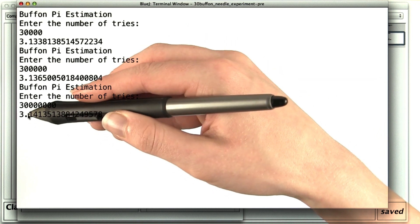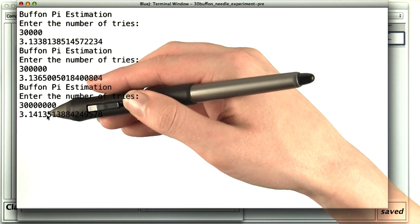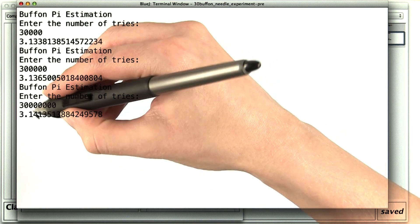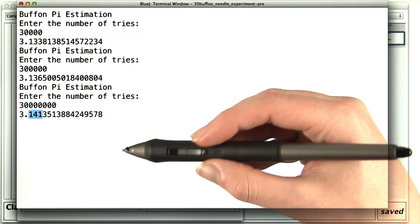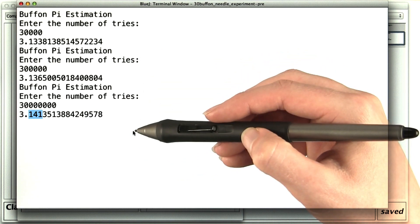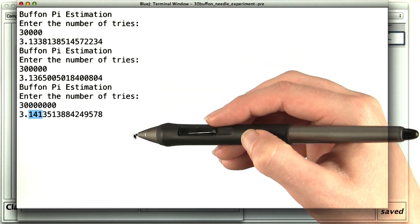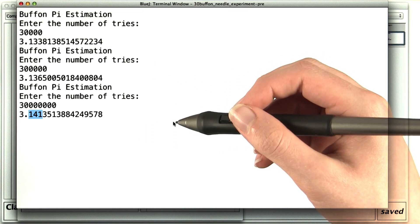And pi is actually 3.1415 something or another. So we've only got three digits correct. I think anyone who tried to do this without a computer would be flipping needles for their entire life. This method was simply not viable without a computer.